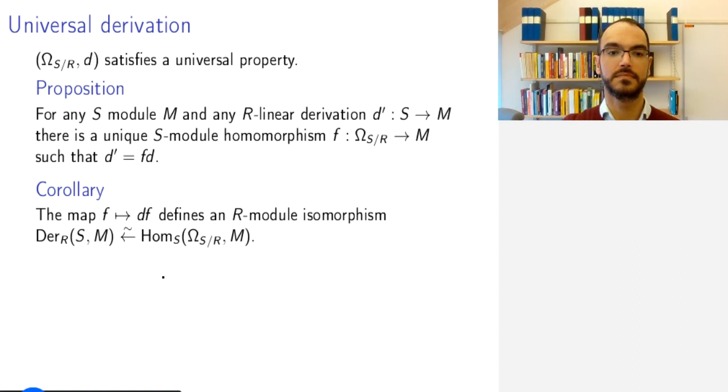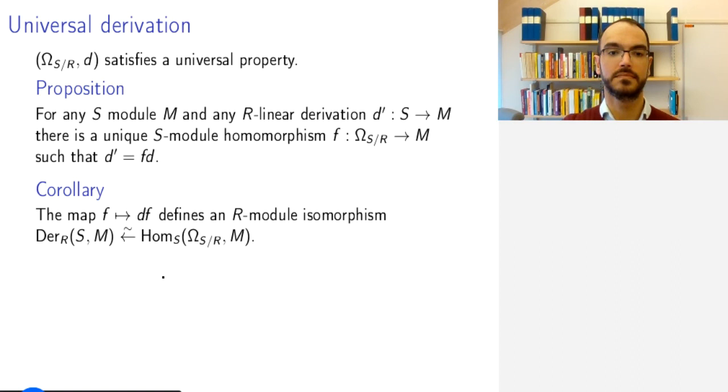In this setting, if we take as R our algebraically closed field over which we usually work when we study curves, and as S the function field of our curve, or in greater generality an algebraic variety, then we get exactly the rational differential forms that we used in the proof of the Riemann-Roch theorem.